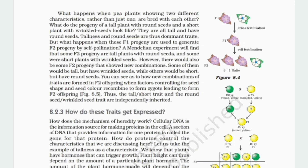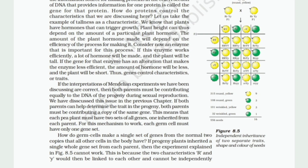How do these traits get expressed? How does the mechanism of heredity work? Cellular DNA is the information source for making proteins in the cell. A section of DNA that provides information for one protein is called the gene for that protein. Let us take the example of tallness as a characteristic. We know that plants have hormones that can trigger growth. Plant height can thus depend on the amount of a particular plant hormone. The amount of the plant hormone made will depend on the efficiency of the process for making it. Consider an enzyme that is important for this process. If this enzyme works efficiently, a lot of hormone will be made, and the plant will be tall. If the gene for that enzyme has an alteration that makes the enzyme less efficient, the amount of hormone will be less, and the plant will be short.